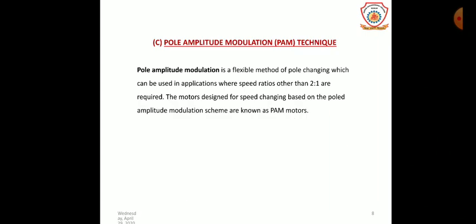The pole amplitude modulation method addresses the basic disadvantage of the other methods, which is the non-availability of smooth speed control. The ratio of the two speeds in this method need not necessarily be 2:1. Motors designed for speed changing based on pole amplitude modulation schemes are known as PAM motors.